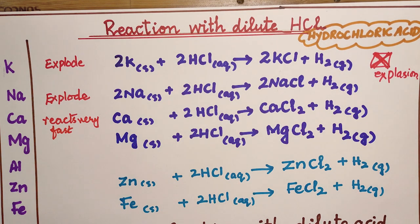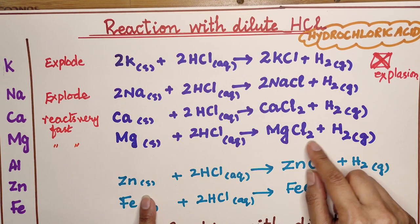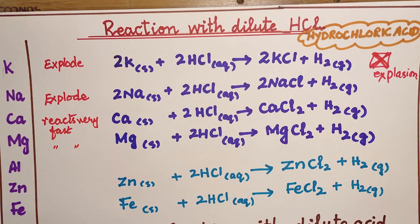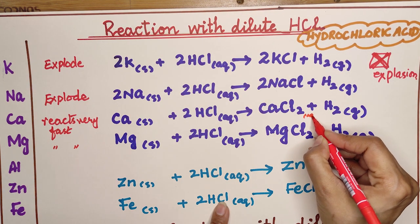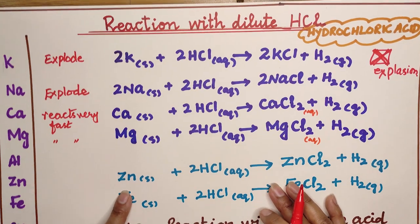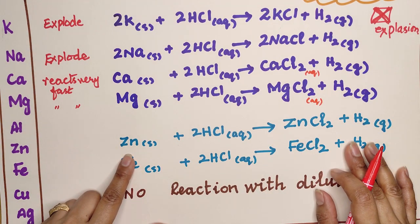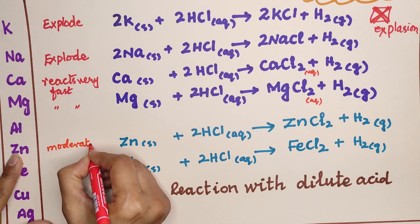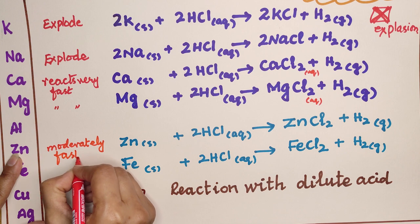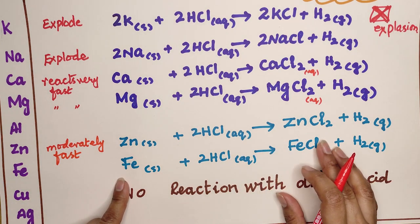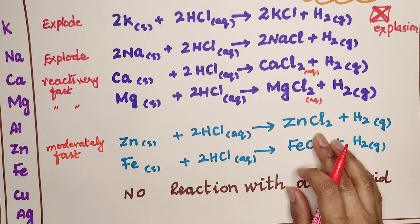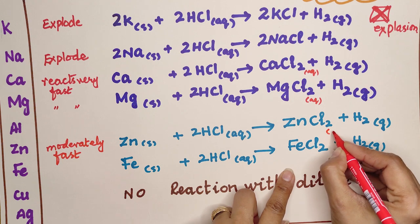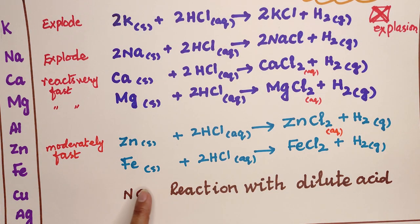Magnesium also reacts very fast with hydrochloric acid, forming aqueous magnesium chloride solution and hydrogen gas. Zinc reacts moderately fast with hydrochloric acid to produce zinc chloride solution and hydrogen gas.